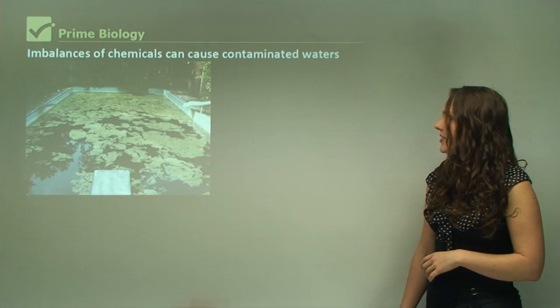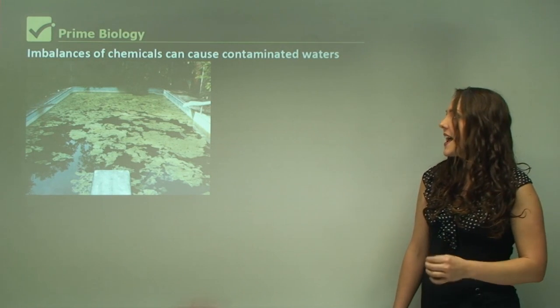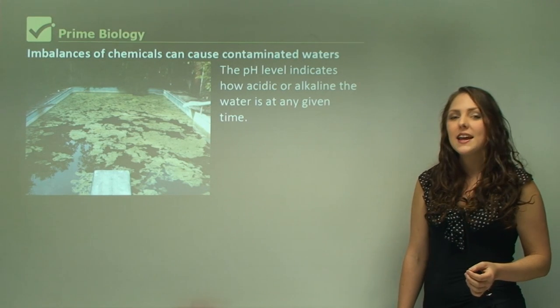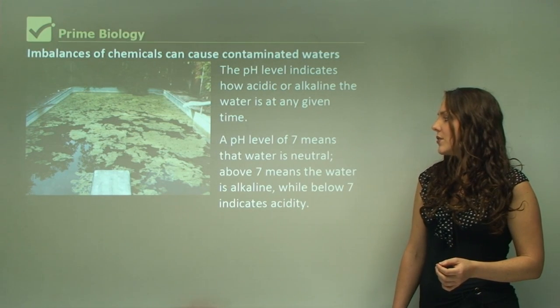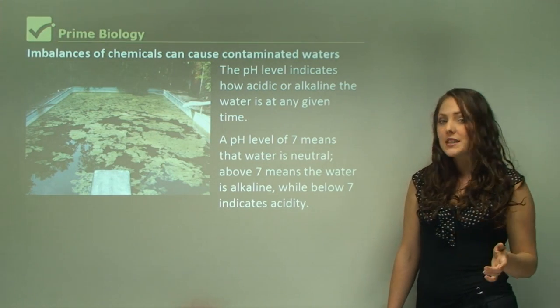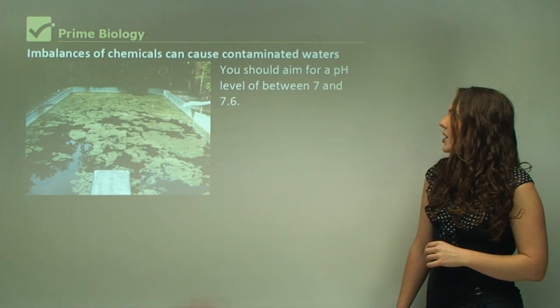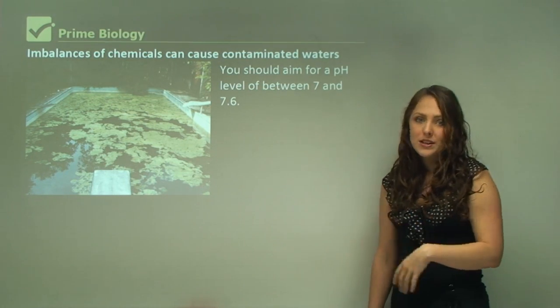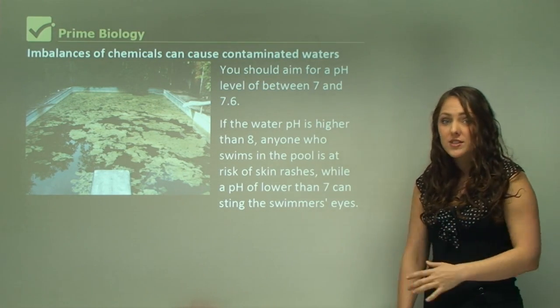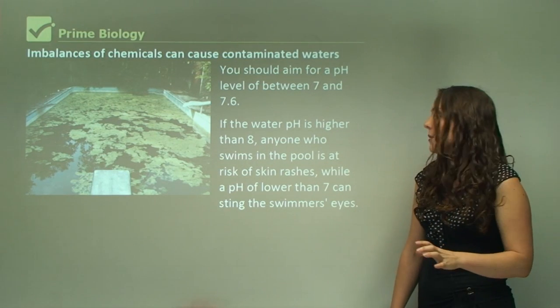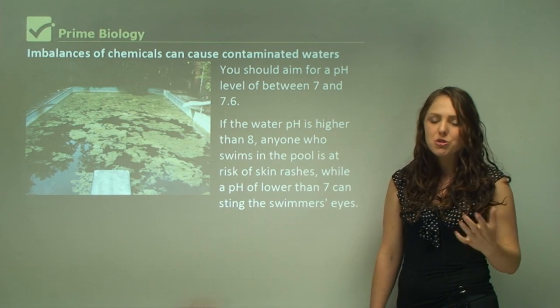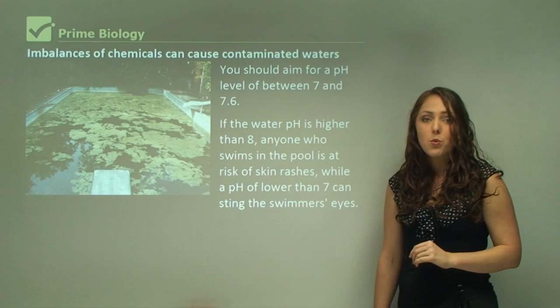Imbalance of chemicals can cause contaminated waters. The pH level indicates how acidic or alkaline the water is at any given time. A pH level of 7 means water is neutral. Above 7 means water is alkaline, and below 7 means the water is acidic. You should aim for a pH level between 7 and 7.6. If you've got a pH of 8, it can cause some skin reactions. Above pH 8 is not good, but also if it's below pH 7 it can cause eye irritation. If you've ever been swimming and got irritated eyes, it could be from how acidic the water is.